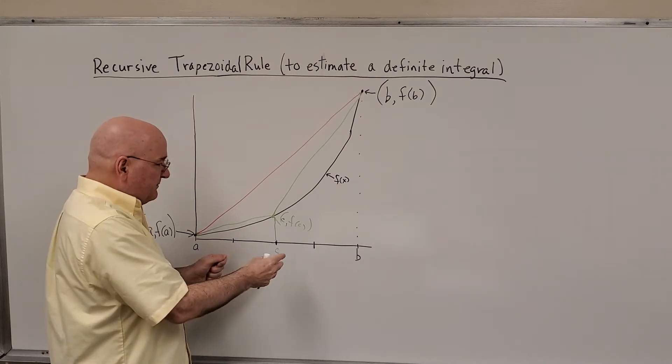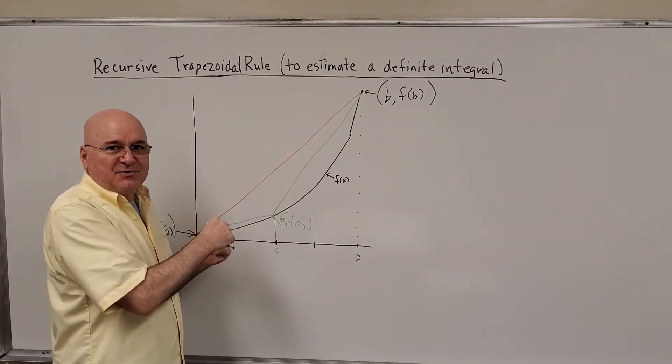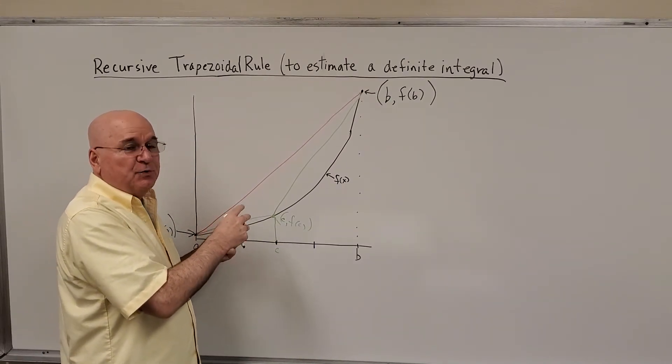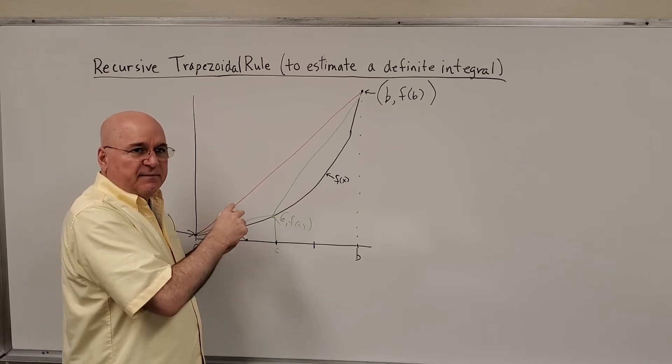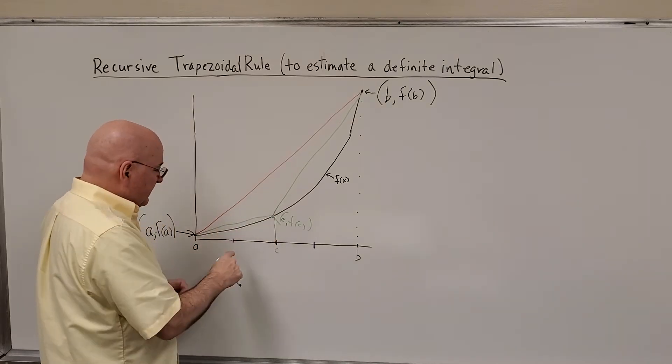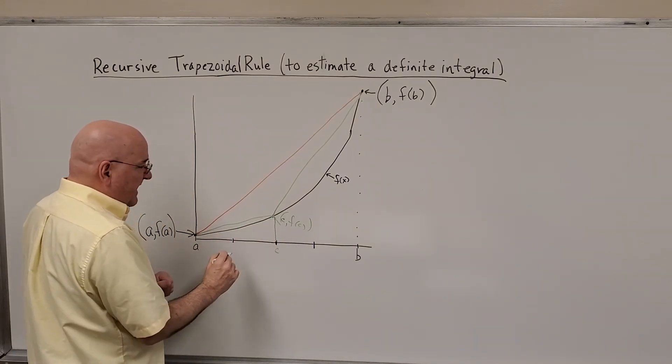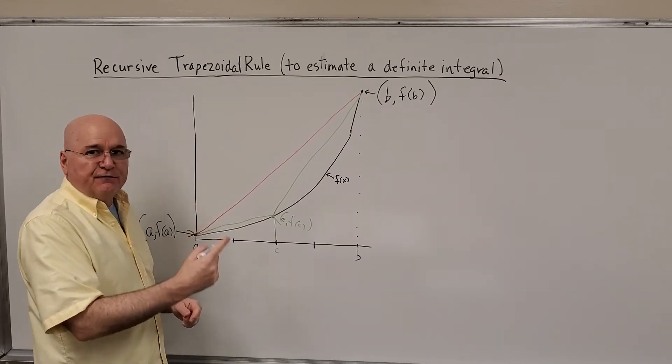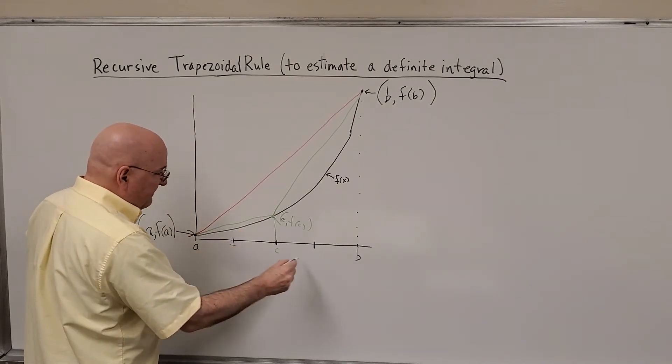So what we're going to end up doing is take the previous value when we had two intervals, do a little manipulation with it, and then do some manipulations with the two points that we added. Notice from two to four intervals, all we did was add that point and that point.